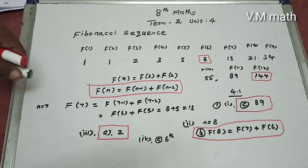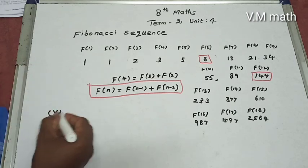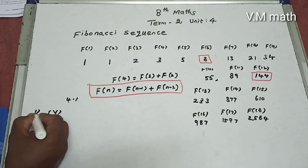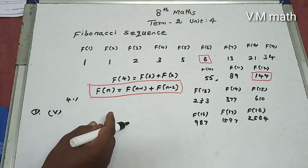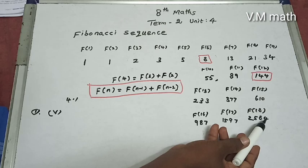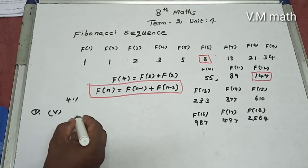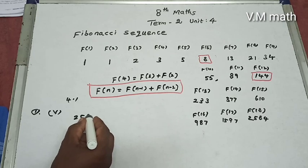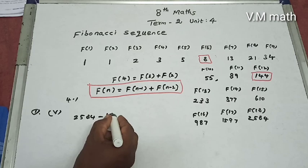Fifth question: The difference between the 18th and 17th Fibonacci numbers. The 18th Fibonacci number is 2,584 and the 17th is 1,597. The difference is 2,584 minus 1,597 = 987.